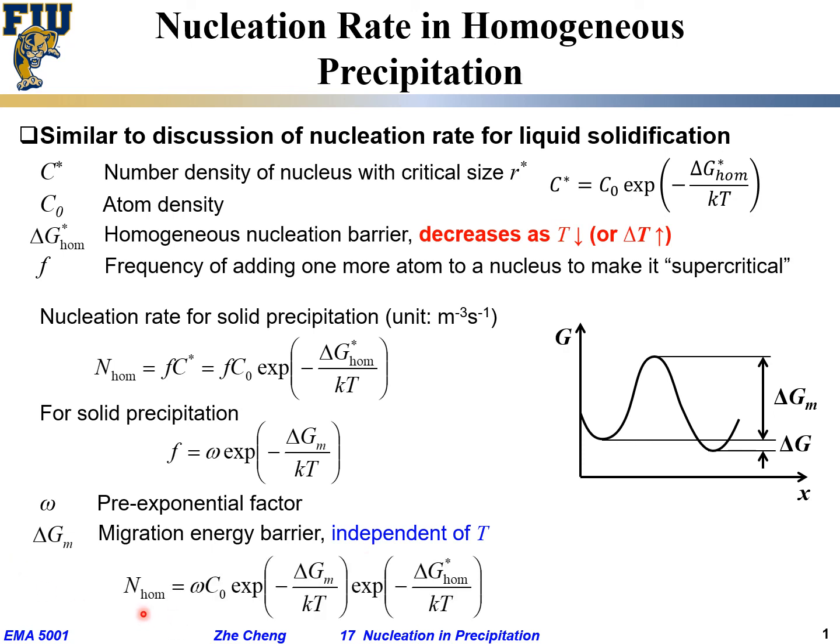As a result, we write the total N_homo homogeneous nucleation rate as all these terms which time together: omega, that's related to how frequent we're adding atoms; C0 is initial atom density. The first ΔG, the exponential term, represents the probability of overcoming the migration barrier. The second one would be the probability of finding a so-called critical nucleus.